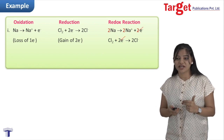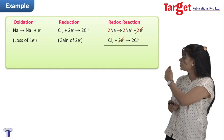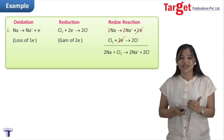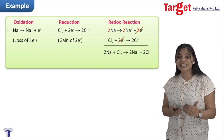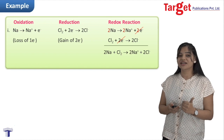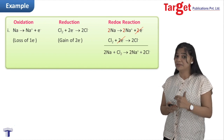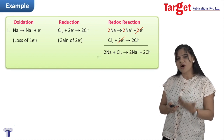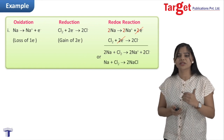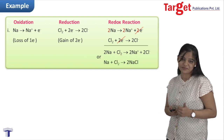When we add the two reactions, we cancel the electrons to get the final reaction: Na + Cl₂ → Na⁺ + Cl⁻, or simply written as Na combined with Cl₂ to form NaCl.